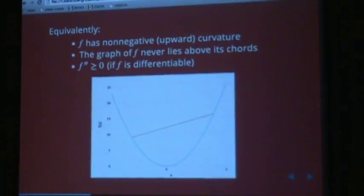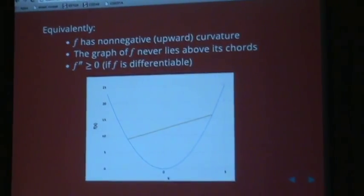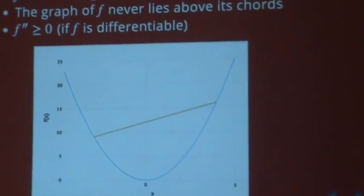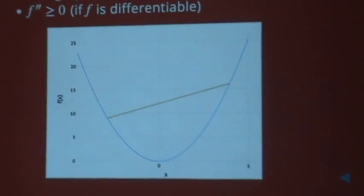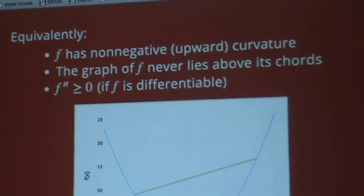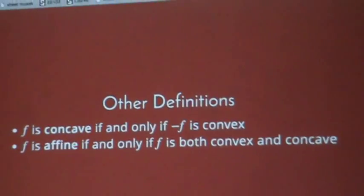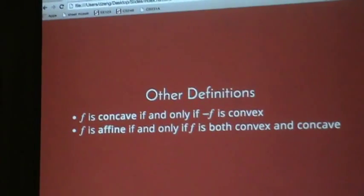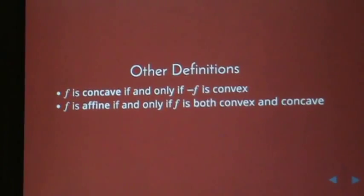So this is a kind of long-winded definition, but what it really means is you have a bowl-shaped function where if you draw the graph for the function, chords between two points on the graph will always lie above the function. A function is concave if and only if its negative is convex, and a function is affine if it's both convex and concave. Affine is basically linear but maybe not passing through zero.